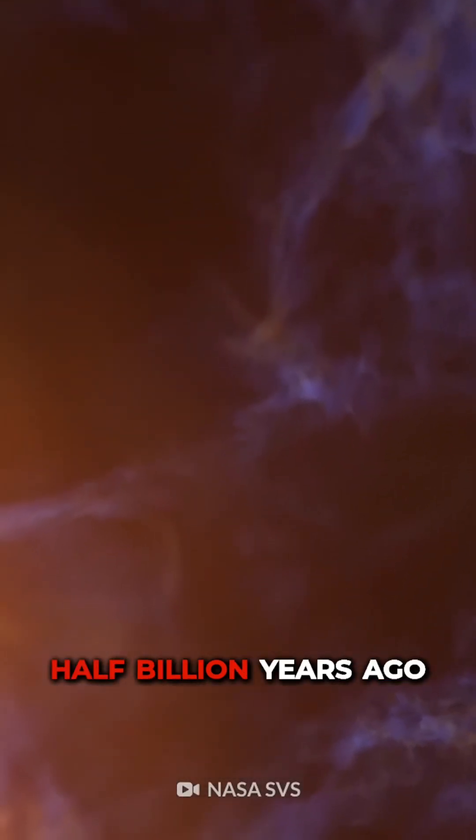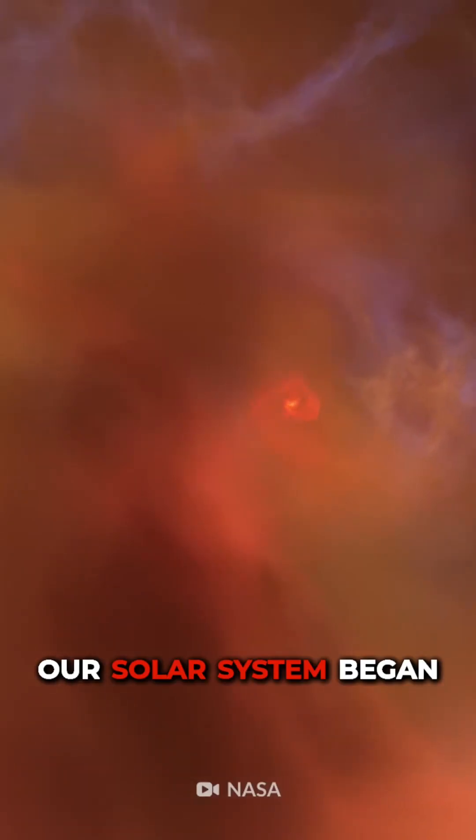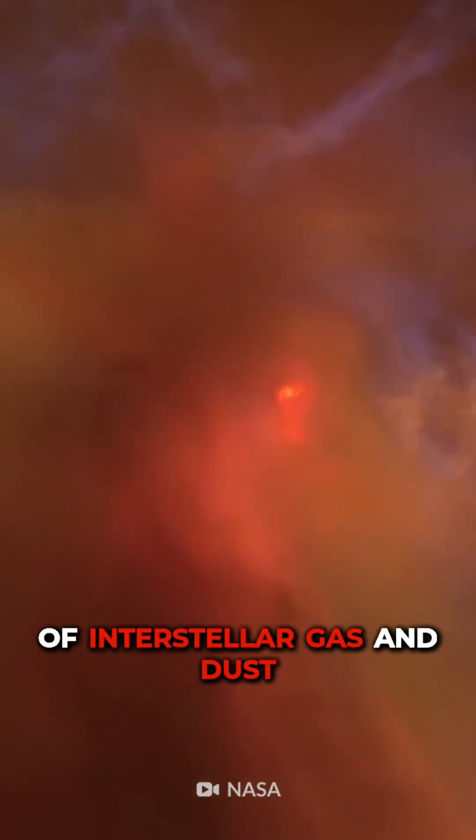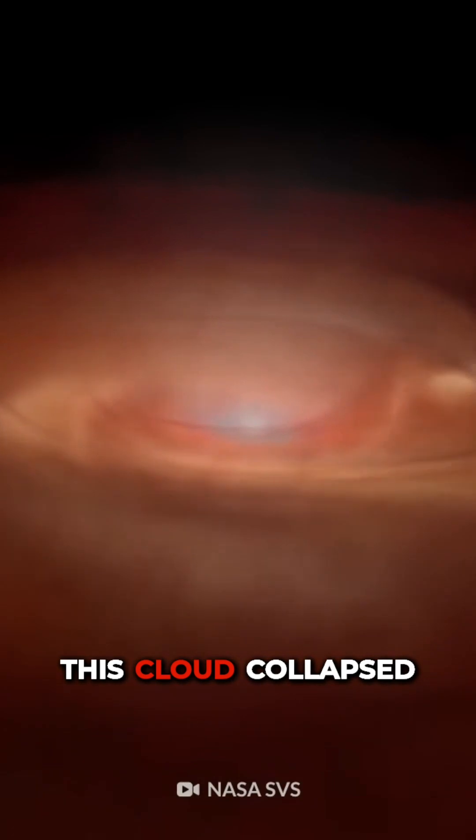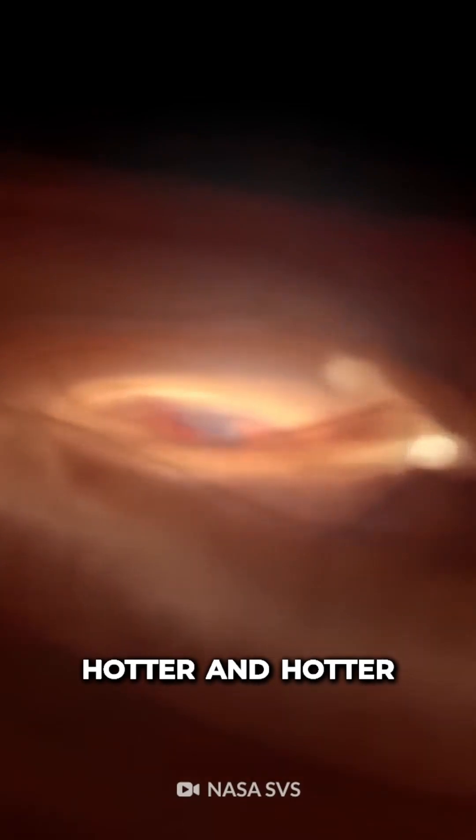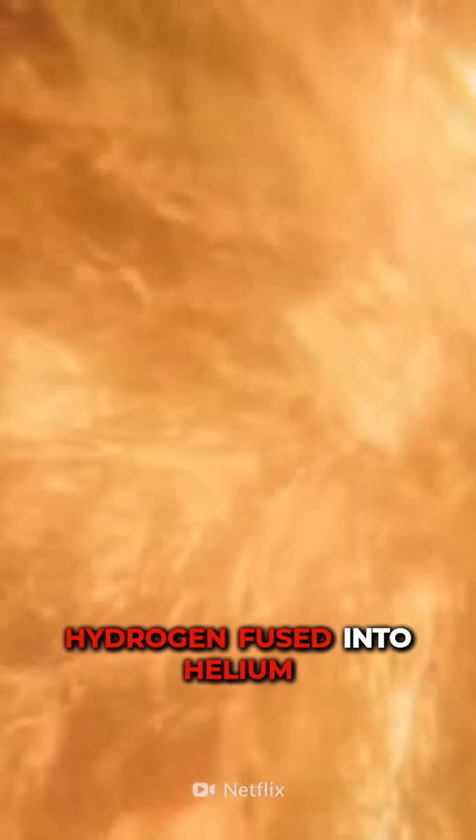Some 4.5 billion years ago, our solar system began to emerge out of a dense cloud of interstellar gas and dust. This cloud collapsed into a swirling disk of matter that got hotter and hotter until hydrogen fused into helium.